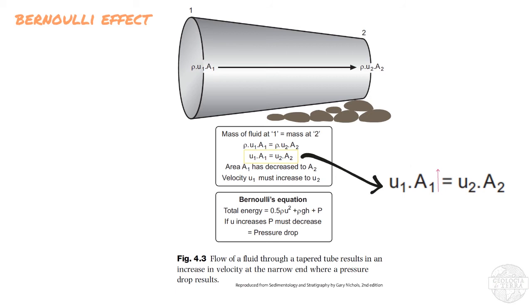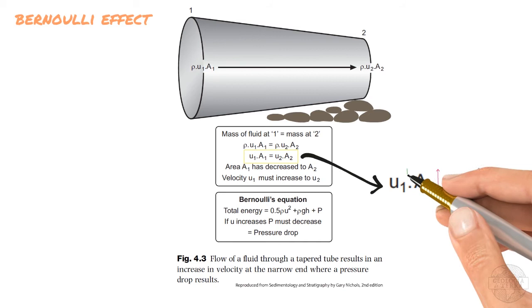But we know that area one is greater than area two, so in order for us to maintain a constant transport of mass, we have to have a higher velocity through area two than through area one.